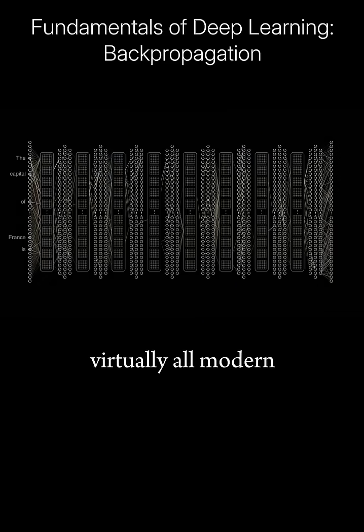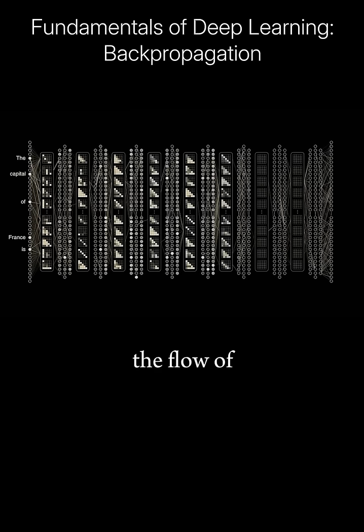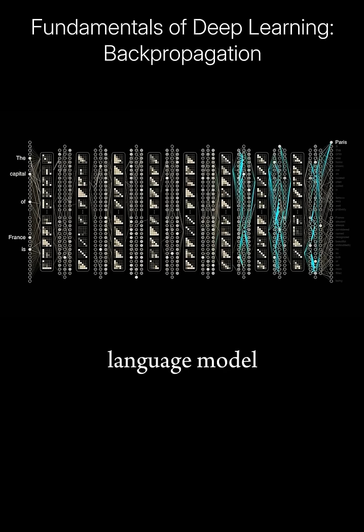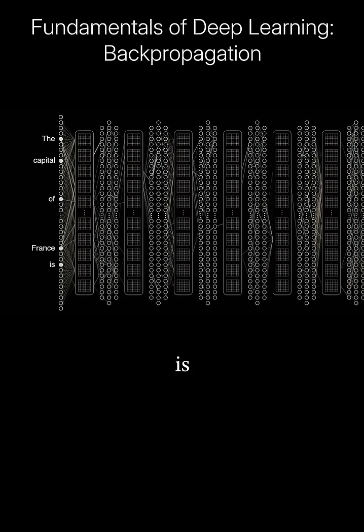And today, virtually all modern AI models are trained using backpropagation. This animation shows the flow of real data through Meta's LLAMA 3.2 large language model. Given some input text, like the capital of France is,